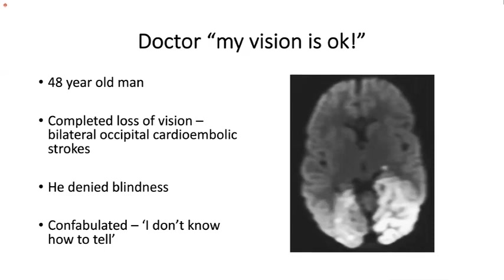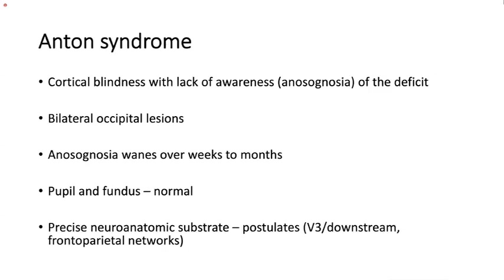Anton syndrome: a patient with profound sudden bilateral vision loss due to bilateral occipital cardioembolic strokes denies blindness. When asked to describe objects in front of him, he says he does not know how to tell, insisting his vision is okay. Anton syndrome is cortical blindness with lack of awareness of the deficit. It is usually seen in acute bilateral occipital lesions, and the anosognosia wanes over weeks to months as the patient may slowly become aware of the deficit.